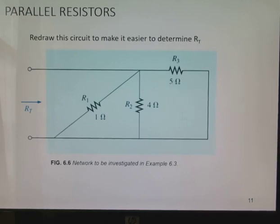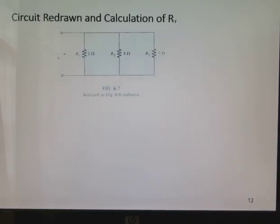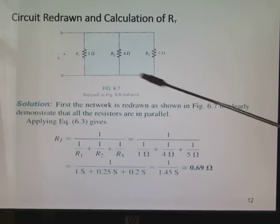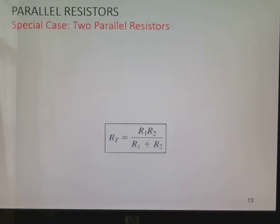If you have a circuit that doesn't look pretty like that, you can rearrange it to make it look better. Notice we have 1, 4 and 5 ohms. Same thing here. We just redrew it and to solve for that 1 over 1 plus 1 over 4 plus 1 over 5 all over 1 equals 0.69 ohms. That's the total resistance of that circuit.